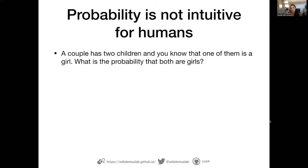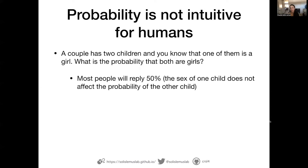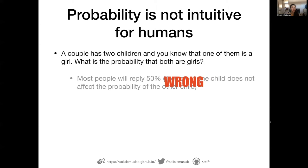Let's say that you know a couple has two children and you know that one of them is a girl. What is the probability that both of them are girls? Most people will reply that it is 50%, because you already know one of them is a girl and the other has a 50-50 chance of also being a girl. I should say that this is wrong, and we will get back to this example later.